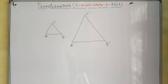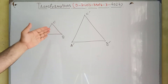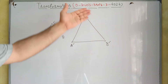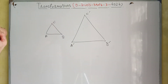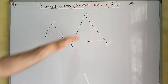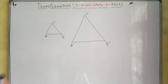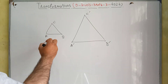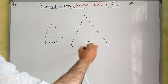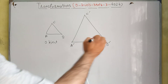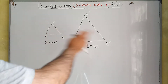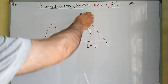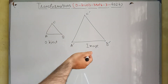Hello dear students, in this video you will study about transformations. Let's suppose this is a triangle ABC and this is triangle A-dash B-dash C-dash. This triangle is basically an enlargement of this triangle. We have made another triangle A-dash B-dash C-dash from this triangle, so this triangle is basically called object and this is the image of this triangle. A-dash is image of A, B-dash is image of B, and C-dash is image of C.